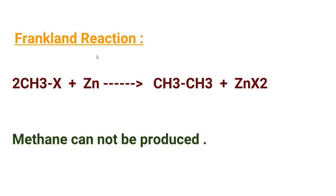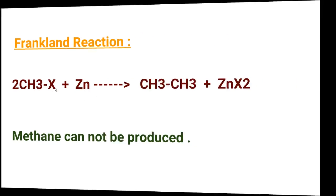Another reaction is the Frankland reaction. Again, alkyl halides are used, but only zinc metal is used to reduce the alkyl halides into alkane. Two molecules of alkyl halides react with zinc; zinc takes two halides and forms zinc halide, satisfying its oxidation state. The two remaining alkyl groups join together and form alkane. Note that methane cannot be prepared by this method, as at least two carbons are required. So in the Frankland reaction, alkyl halides are converted into alkanes using zinc.